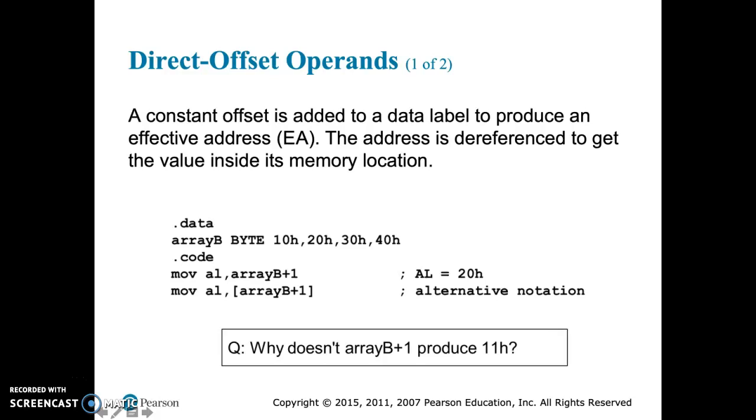And the question below, why doesn't array B plus 1 produce 11H? It's because we're not adding, that would be done with the add instruction, but instead we are grabbing the value of the array B memory location, and we are adding one byte to it. So we are grabbing the value of the second portion of the array.